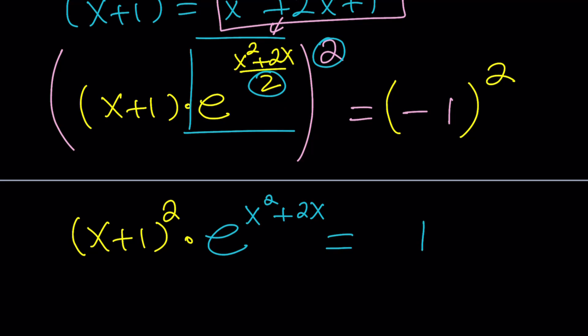We have a positive 1 on the right-hand side. Be very careful because we squared a negative number. So we have to be careful about extraneous solutions. All right. Let's continue.